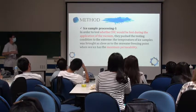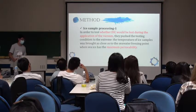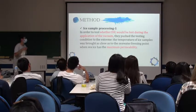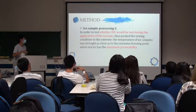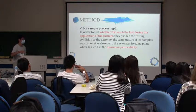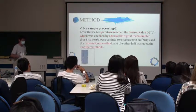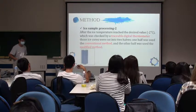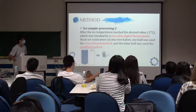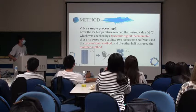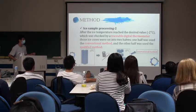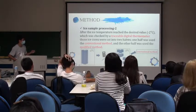In order to test whether DIC would be lost during the evacuation of the vacuum, they pushed the testing conditions to the extreme. The temperature of the ice sample was brought as close as possible to the seawater freezing point, when sea ice has maximum permeability. After the ice sample reached the desired temperature, checked by a digital thermometer, the ice core was cut into two halves — one half used the conventional method and the other half used the modified method.